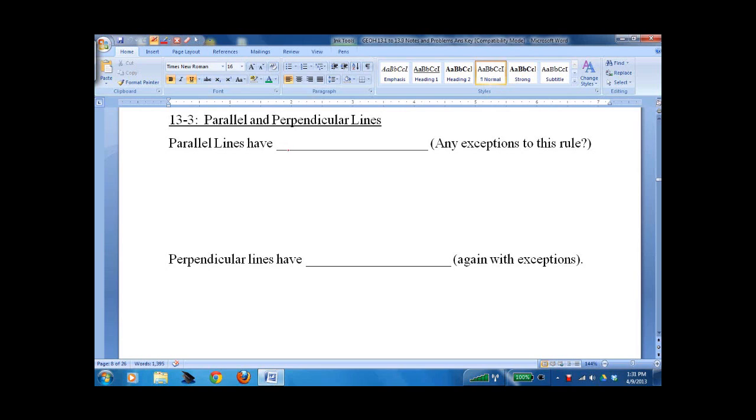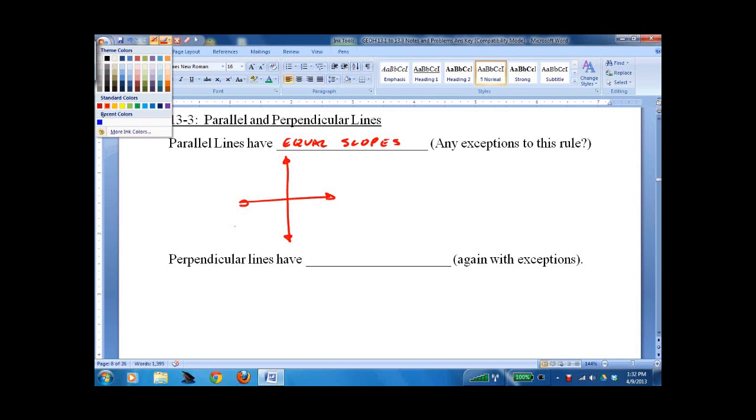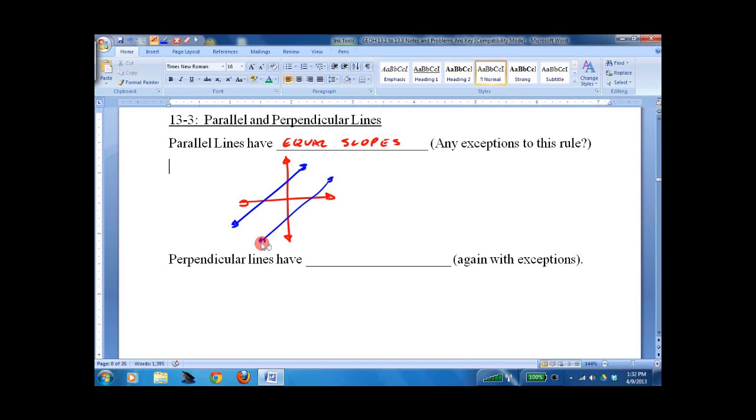Parallel lines have equal slopes. If we have a coordinate plane and we have some lines, let's say this is y equals, call it 4/3x just for the fun of it, minus 3. And this would be y equals 4/3x plus 3. So same slope, they're parallel.